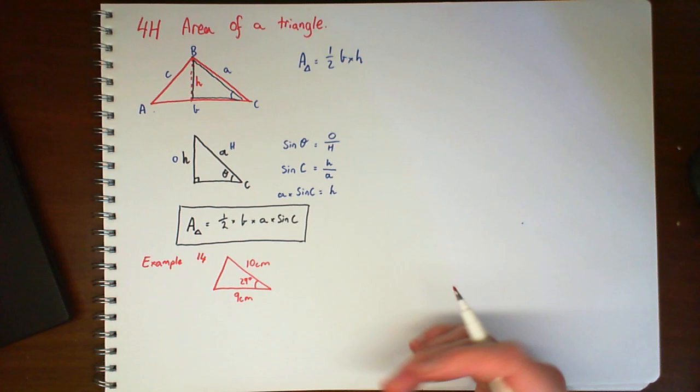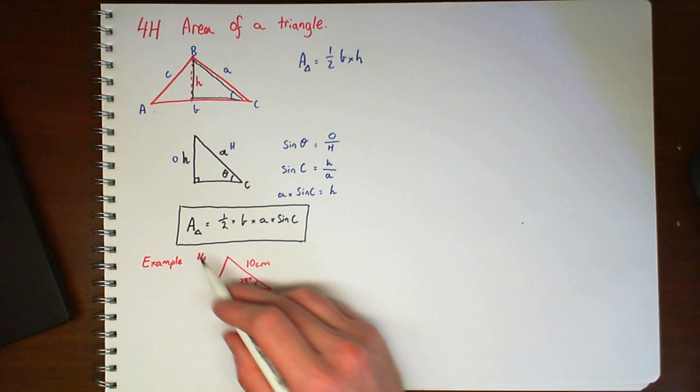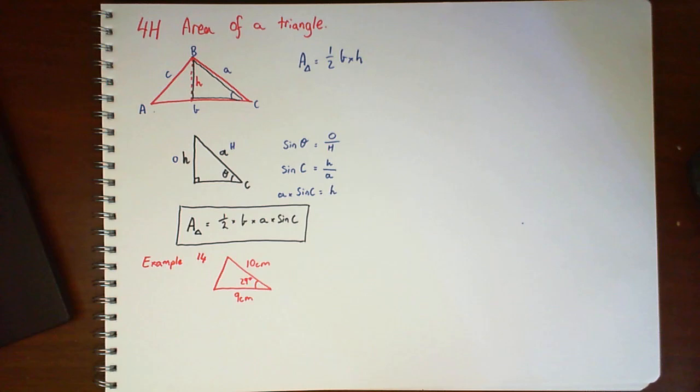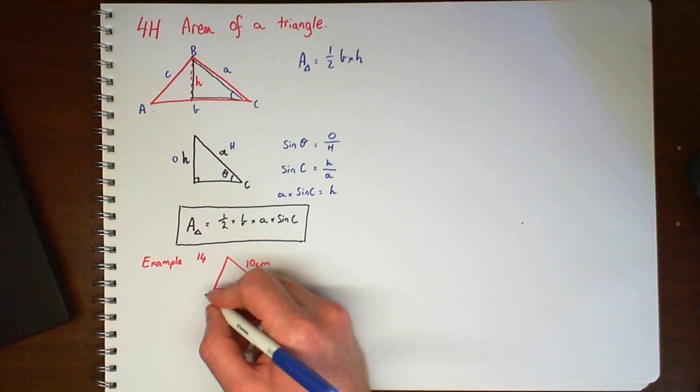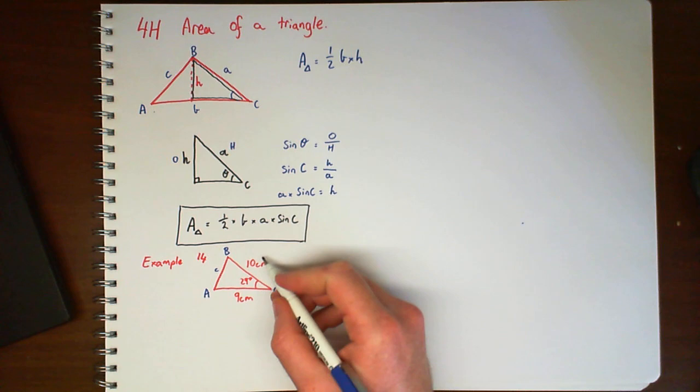Now normally we wouldn't be able to work this out unless we worked out the height first. But now we have this nice little formula that we can use to work out the area of the triangle. So if we label our angle of C,